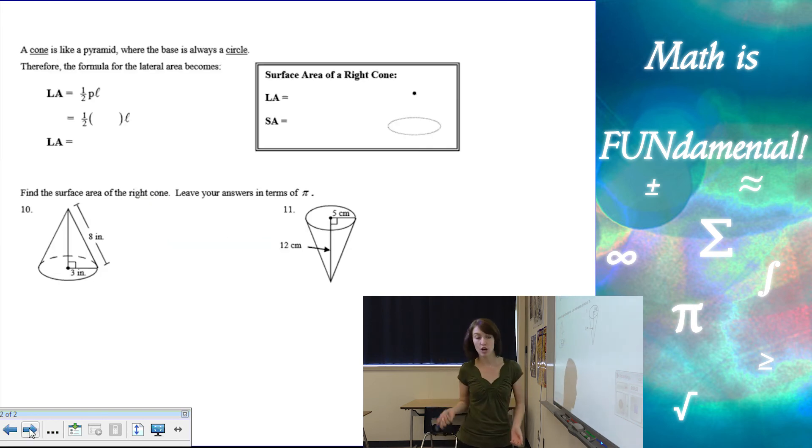So, now let's look at a cone. A cone is just like a pyramid, but the base is a circle. Just like in the last video, we talked about prisms and cylinders. Cylinders are just like prisms with a circular base. Cones are just like pyramids with a circular base. So, instead of 1 half perimeter of the base times the slant height, the perimeter of a circle is a circumference, 2 pi times r. And the 1 half and the 2 end up canceling each other out, and we get pi r l.